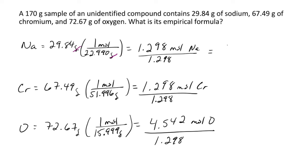For sodium, 1.298 divided by 1.298 gives 1. For chromium, we get 1. And for oxygen, we get 3.5.